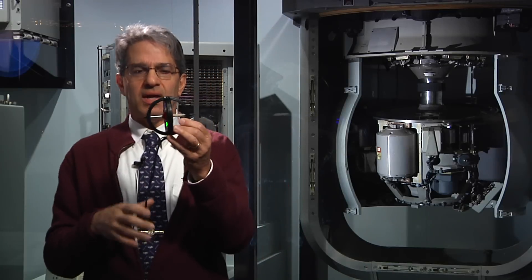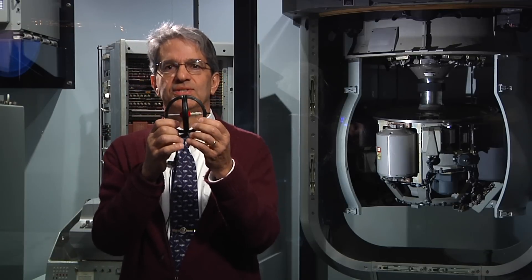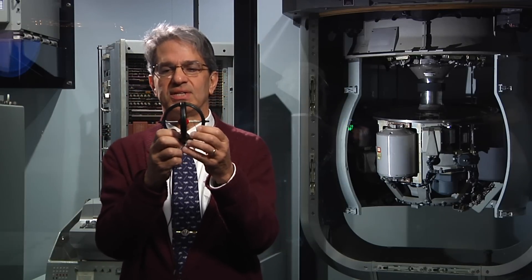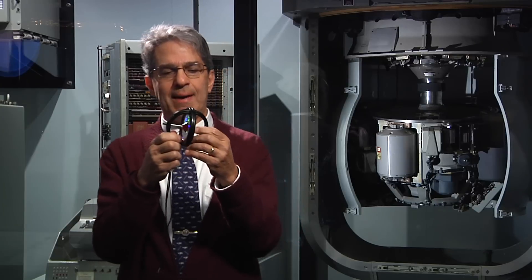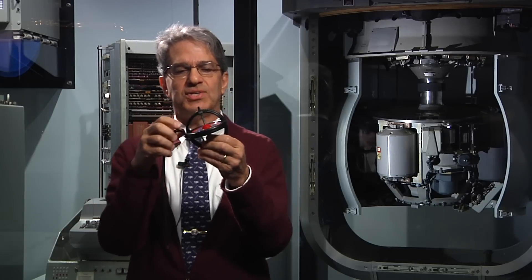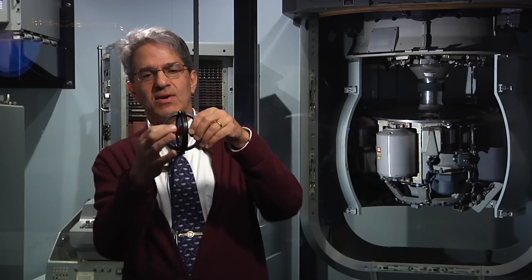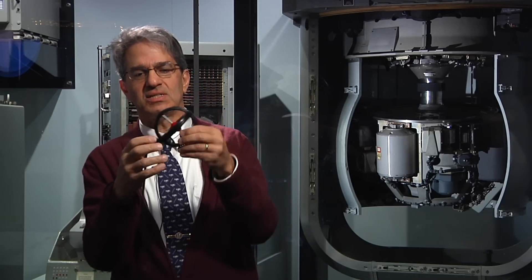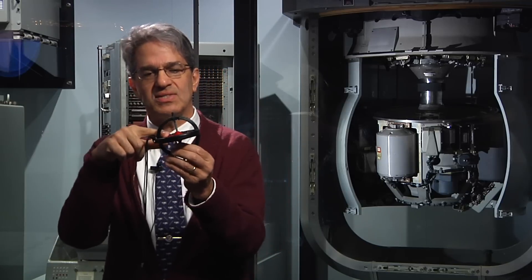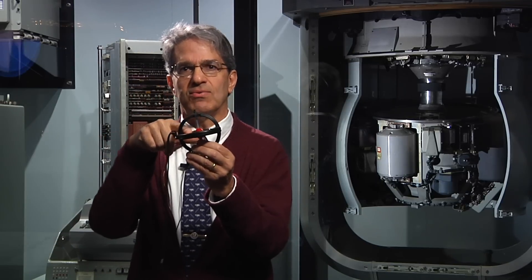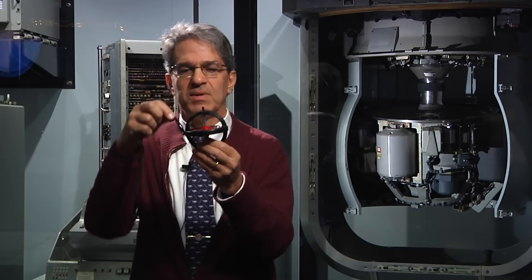I'm now going to illustrate one additional property of gyroscopic guidance, navigation and control, and that is what happens if you suspend the gyro not from the side where the axis of spin is, but if you suspend it from the side that's parallel to the rotational plane of the wheel.